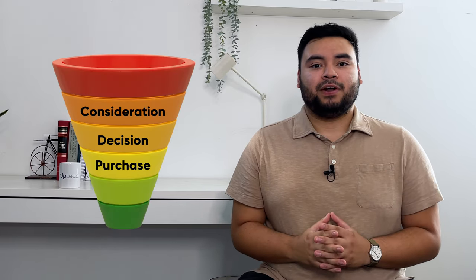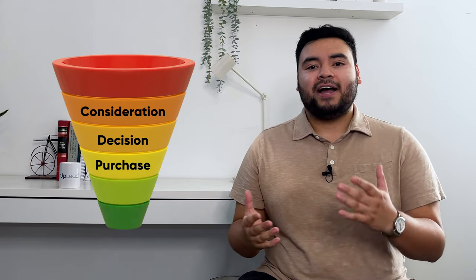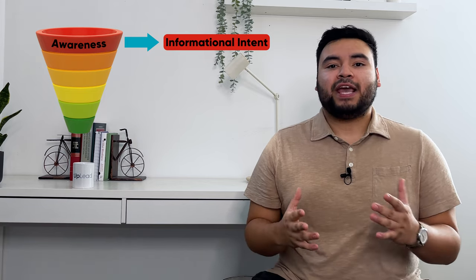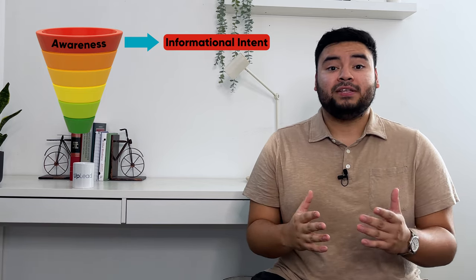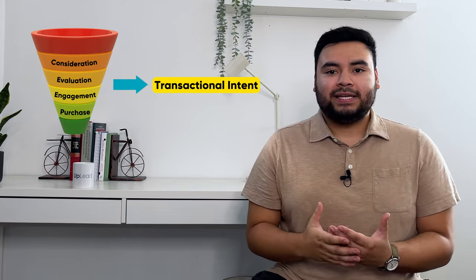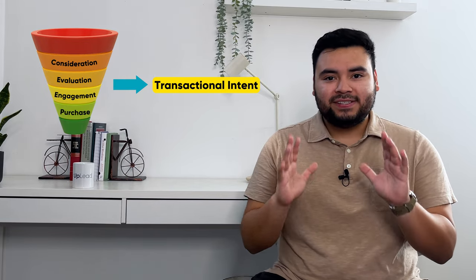Another way to generate leads with intent data is by analyzing your sales funnel to figure out which leads have a higher intent to purchase. Finding out where they are in the funnel will help you build a marketing strategy that generates revenue. For example, if a client is in the awareness stage, your data will show something called informational intent — meaning they're looking for educational content about your brand. But if they're at the consideration, decision, or purchase point of the funnel, transactional intent data will indicate if they're actively seeking to take a specific action, like making a purchase.